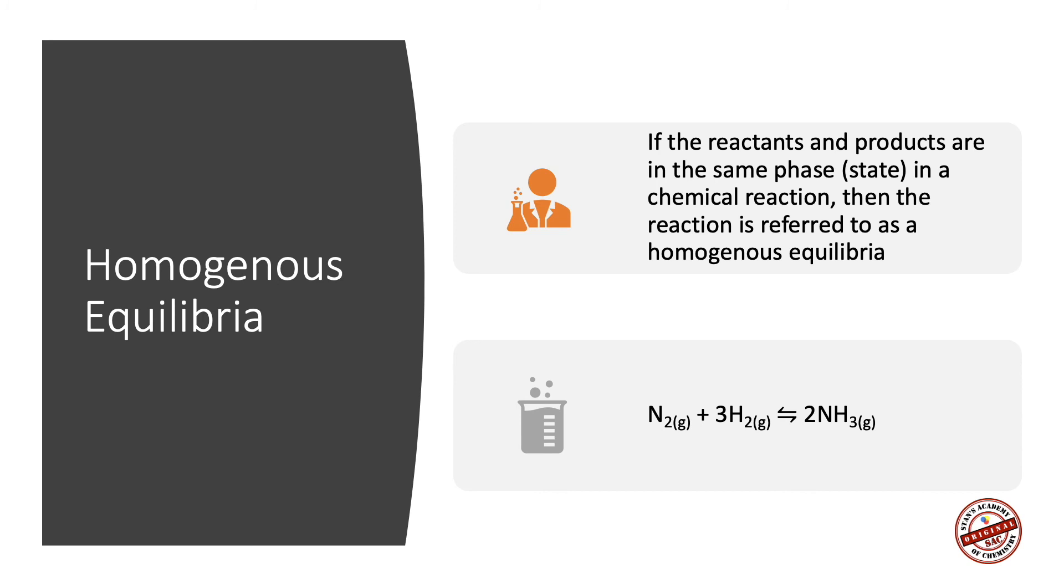In the following equation, you will find that the formation of ammonia gas from the reactants nitrogen gas and hydrogen gas—both reactants and products are in the gas phase.